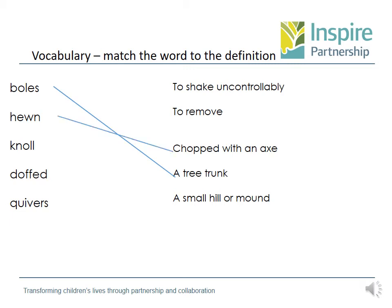Making sure we're using a dictionary, asking a grown-up, and clarifying what some of these words mean. The next word was 'hewn,' which means chopped with an axe — I didn't know that, which is why I had to clarify it by looking online or in a dictionary. 'Knoll' is a small hill or a mound, 'doft' is to remove something, and 'quivers' means to shake uncontrollably. Another clever way of clarifying is to read through the text and see what other words are written around a tricky word — does that help us understand the meaning?